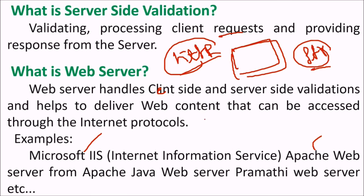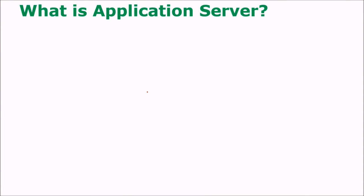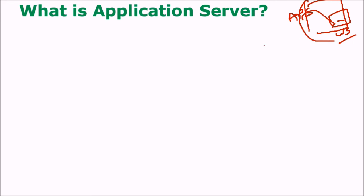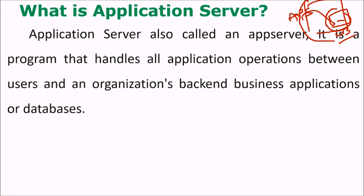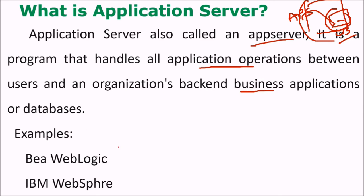What is an application server? An application server contains the web server within it — it is the big brother of the web server. Apart from web serving through HTTP, it also handles other business logic, processing functions, and security levels. An application server is a program that handles all application operations between the user and the organization's back-end business applications or databases, including database access. Examples include WebLogic and WebSphere.